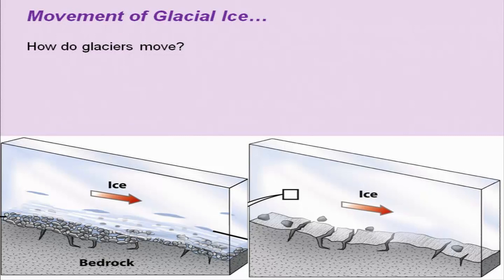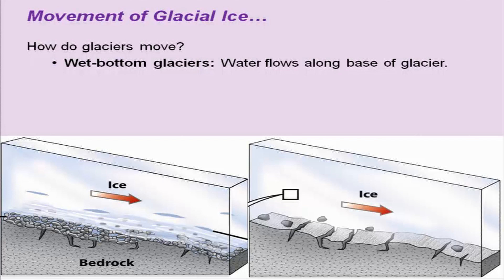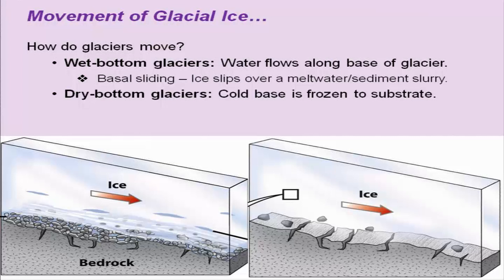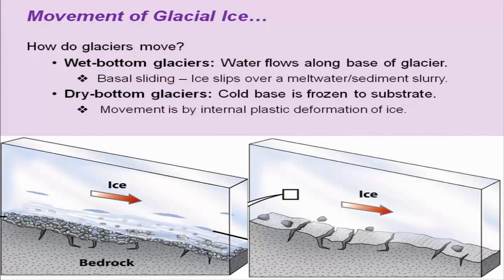How do glaciers move? For wet bottom glaciers, water flows along the base of the glacier, so basal sliding takes place — the basal part moves and forces the upper portion to slide along with it. Basal sliding: ice slips over a meltwater and sediment slurry, because the meltwater creates a slurry along with the sediments being eroded. For dry bottom glaciers, the cold base is frozen to the substrata and movement is by internal plastic deformation of ice.